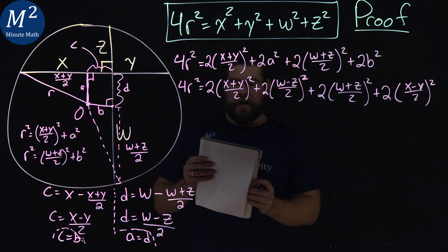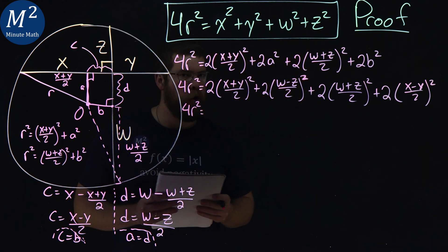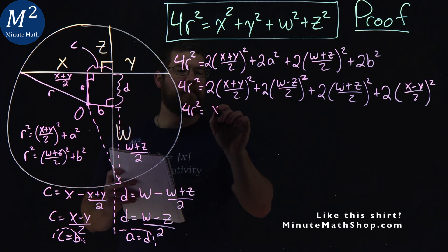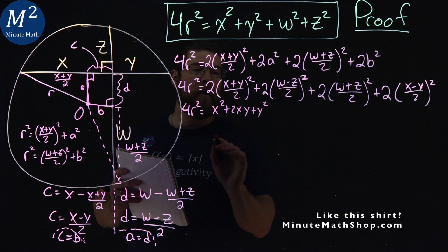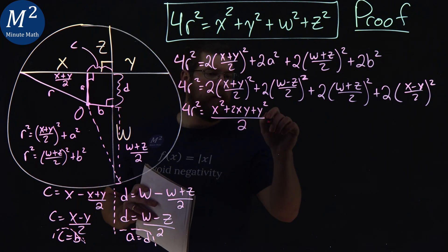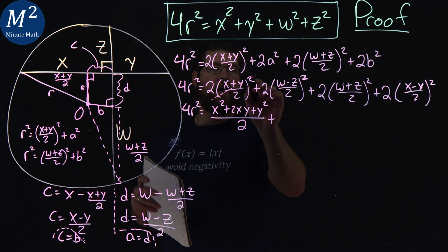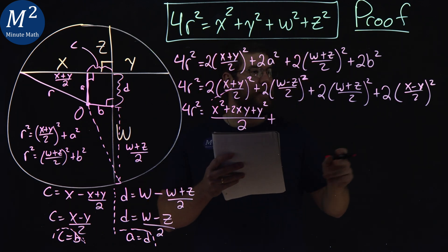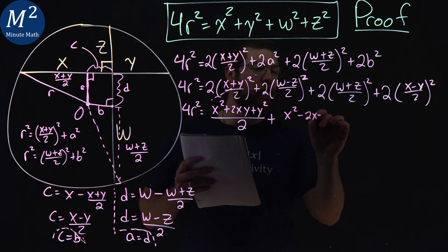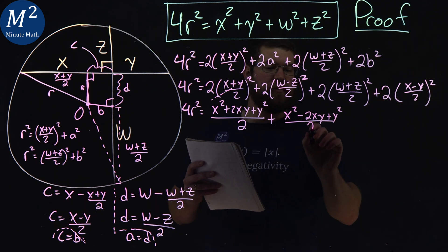All this work. Now it's time to simplify. For 4r², on our right, let's simplify this out. (x + y)² comes out to be (x² + 2xy + y²) over, well, squared the 2 here becomes 4, but we have 2 in the numerator, so we still have 2 in the denominator. I'm working with this one here. (x - y)² comes out to be (x² - 2xy + y²)/2.